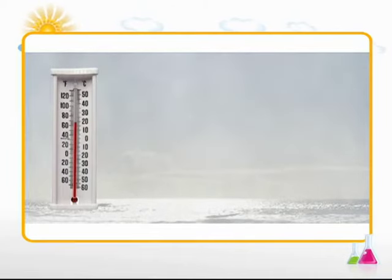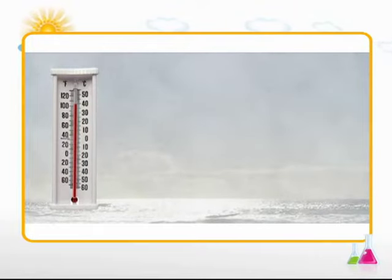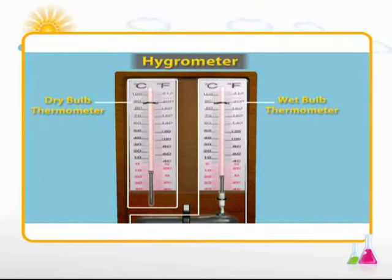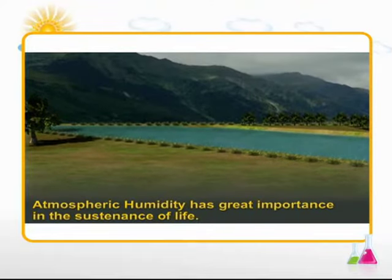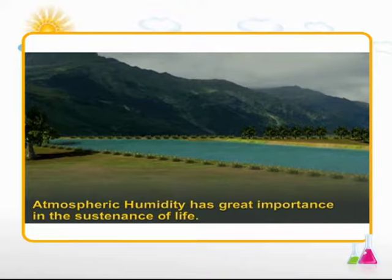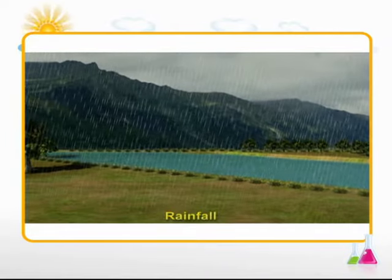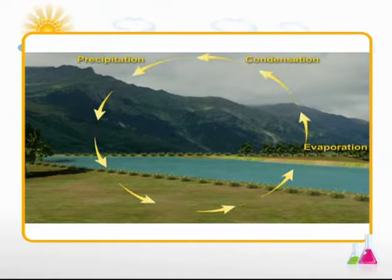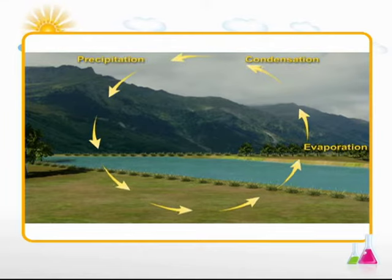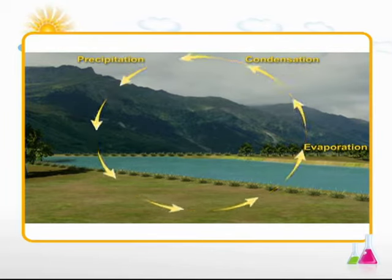Did you know that humidity is closely related to the temperature of the air? As the temperature increases, the evaporation in the atmosphere also increases, causing more humidity. The instrument used to measure humidity is called the hygrometer. Atmospheric humidity has great importance in the sustenance of life, as it produces rainfall which brings fresh water for living beings on Earth. Moreover, it controls climatic conditions by helping in the heating and cooling of the atmosphere.